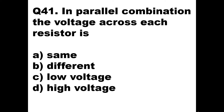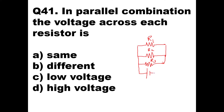Question number 41: In parallel combination, the voltage across each resistor is what — whether it is same, different, low voltage, or high voltage? If you see a parallel combination with resistor one, resistor two, and resistor three, and you apply a voltage to it, that voltage will be the same across each resistor if measured by a voltmeter.